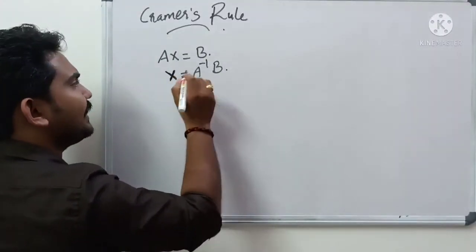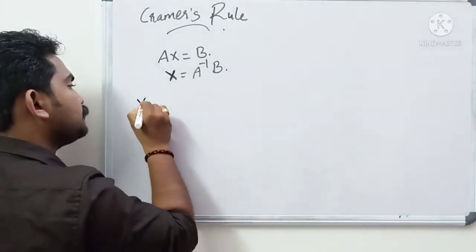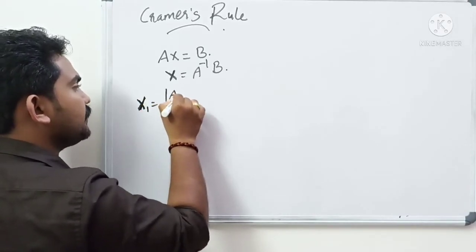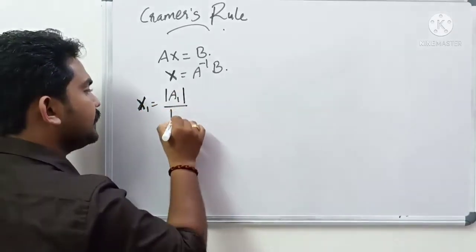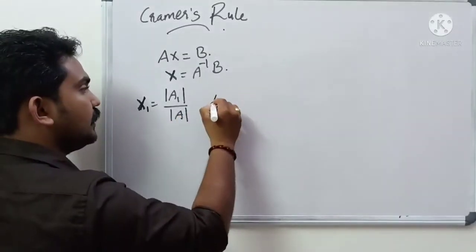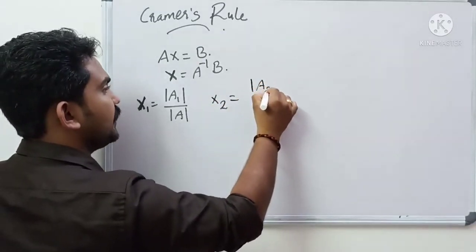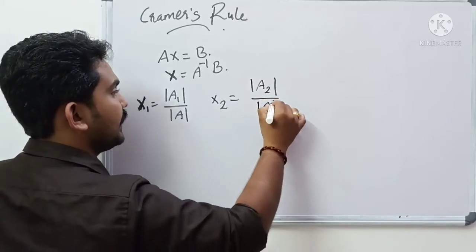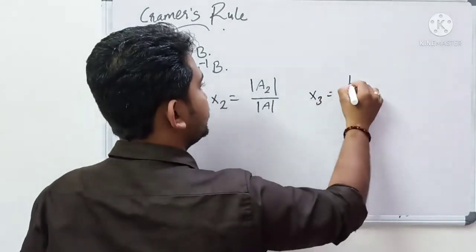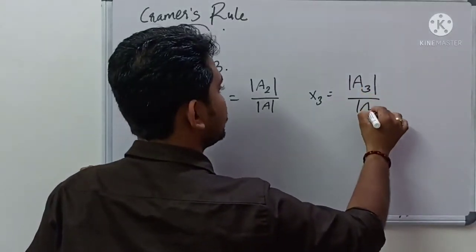x is the value of A inverse b. We will go to the equation: x1 is equal to determinant of A1 divided by determinant of A. x2 is equal to determinant of A2 divided by determinant of A. x3 is equal to determinant of A3 divided by determinant of A.